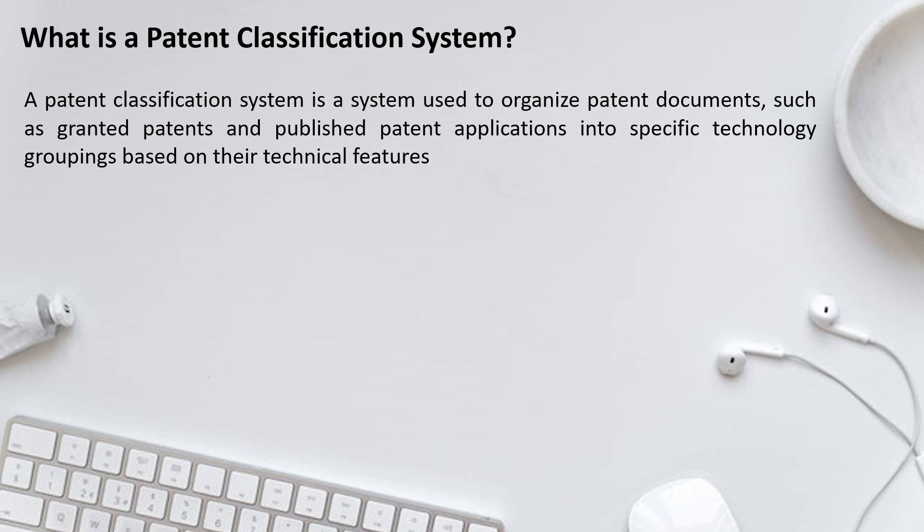This can also be explained via the example of a library. If you visit a library, the books are arranged in a very systematic manner. For example, books related to fiction will be arranged in a specific section, non-fiction books will be arranged separately, comic books separately, and scientific books in a different space. Such an arrangement makes it easier to find books. Similarly, since there are millions of patent documents, it is very important to have a systematic classification to find them.